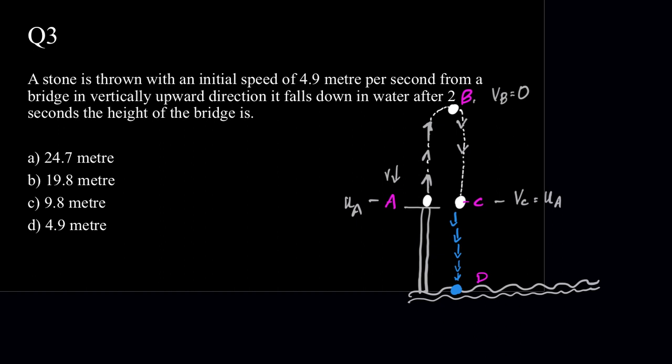Now, the whole time of flight is given to be, it will fall after 2 seconds, so time of AB plus time of BC plus time of CD is given to be 2 seconds. UA is given to be 4.9 meters per second. What I have been asked to find out is the height of the bridge.